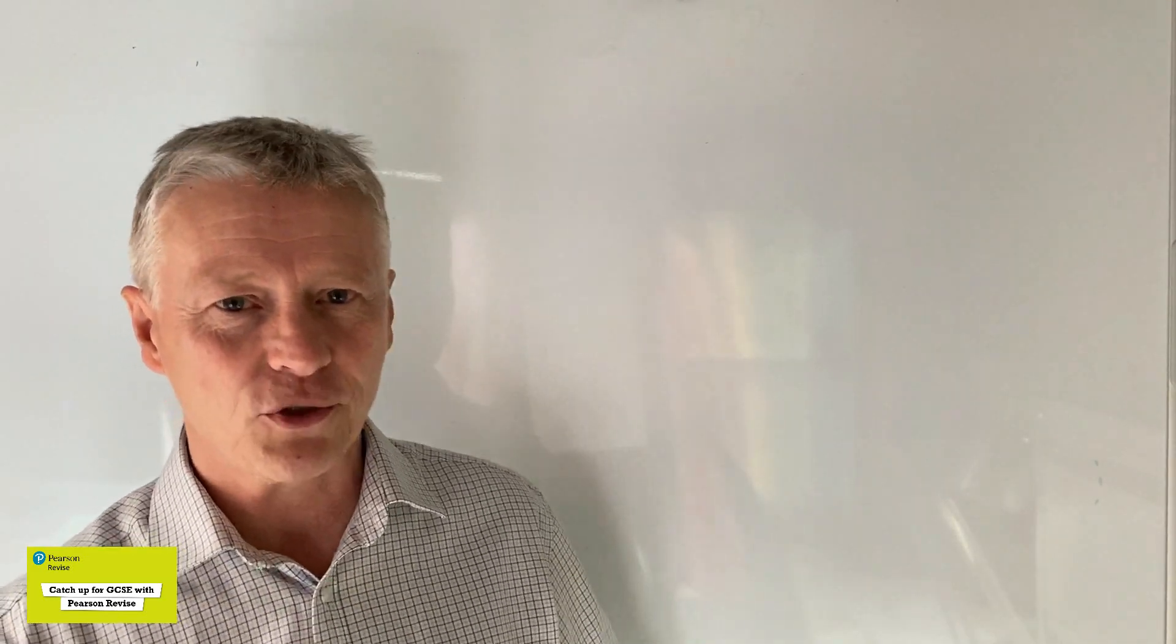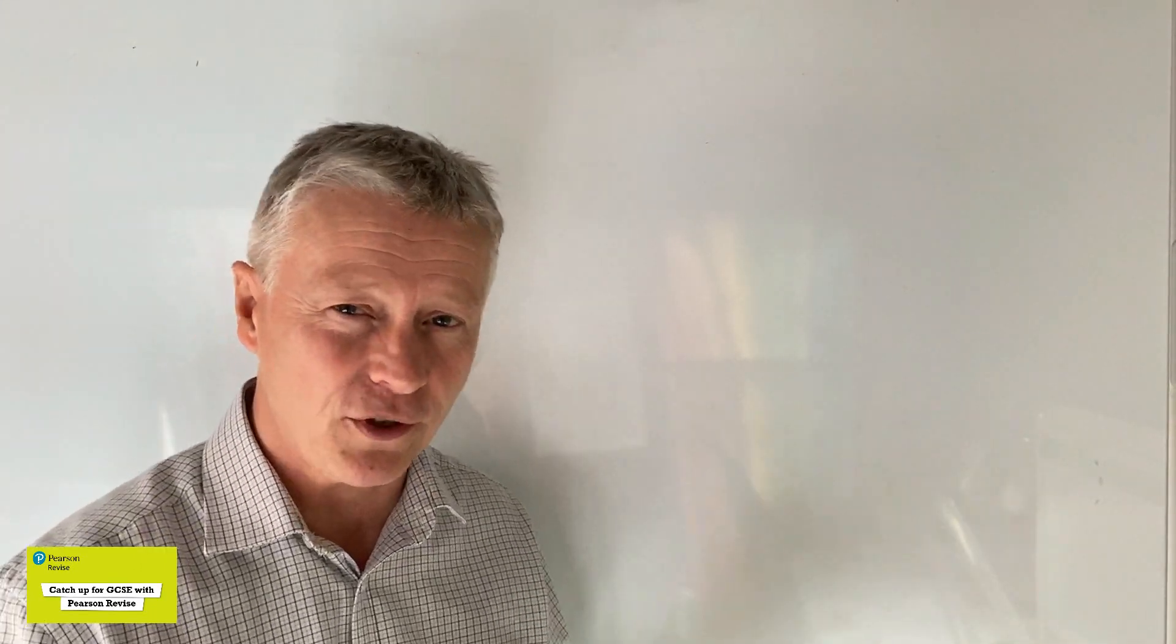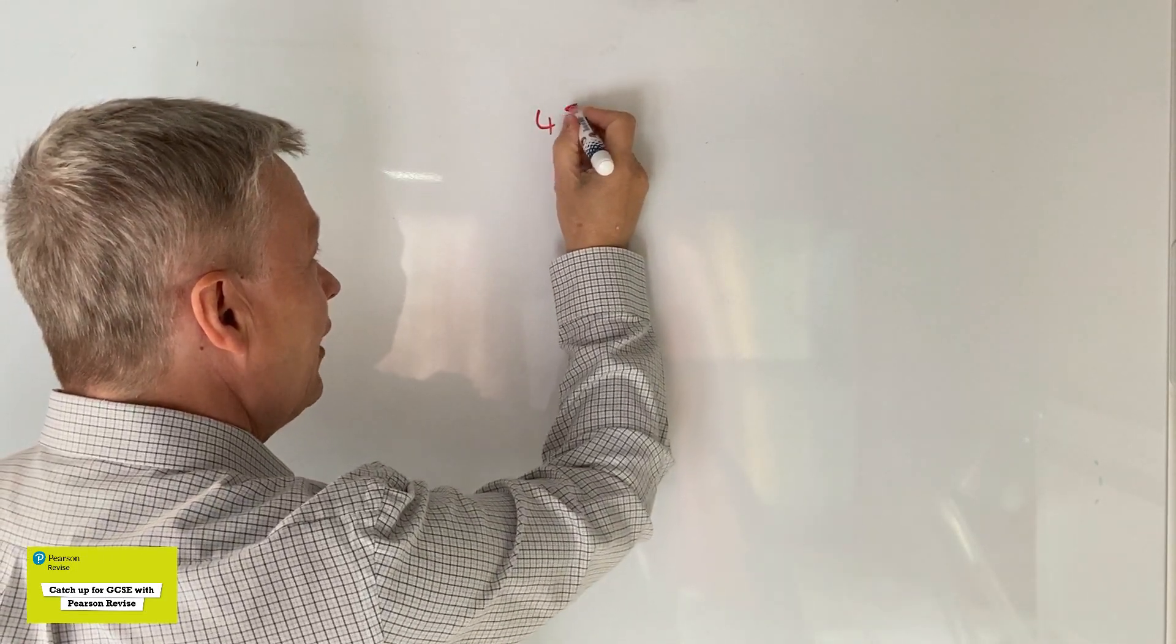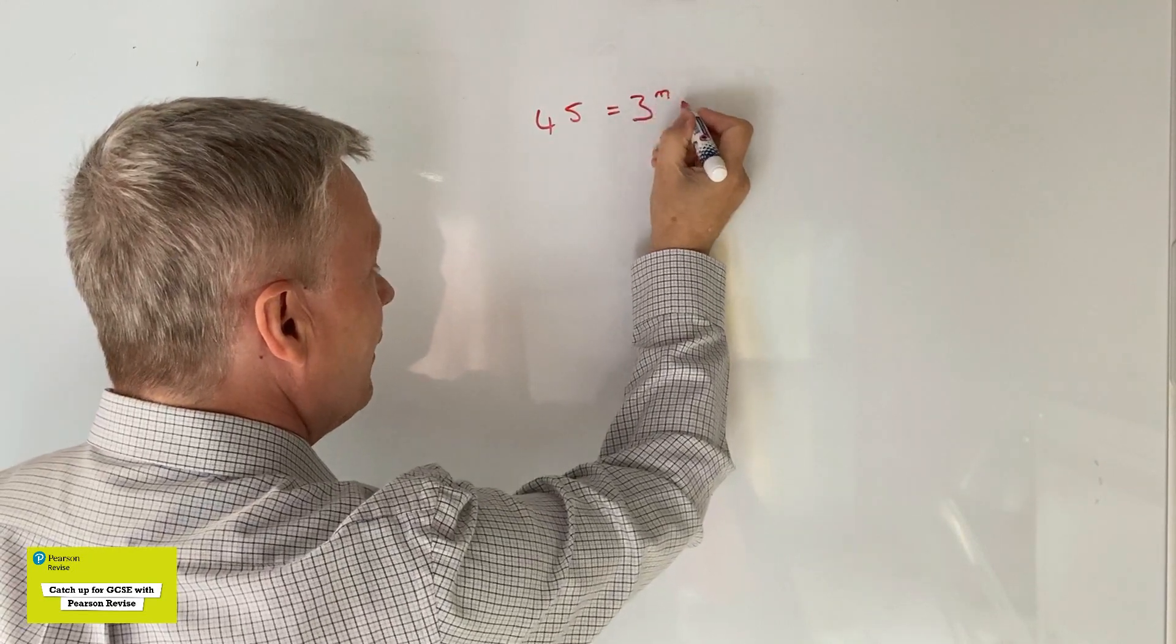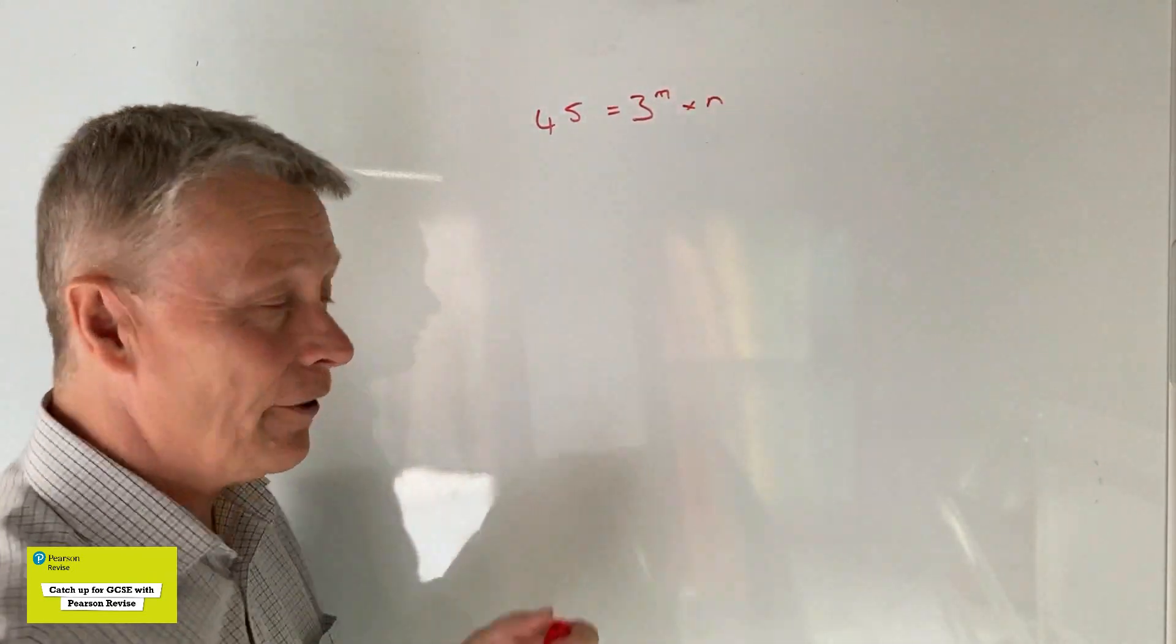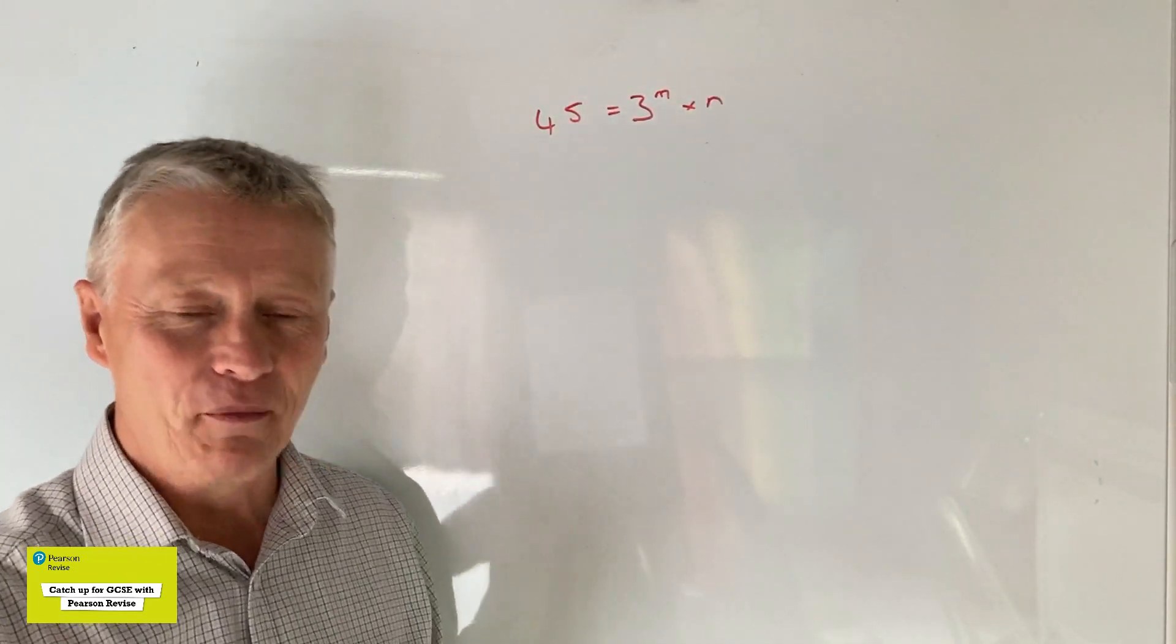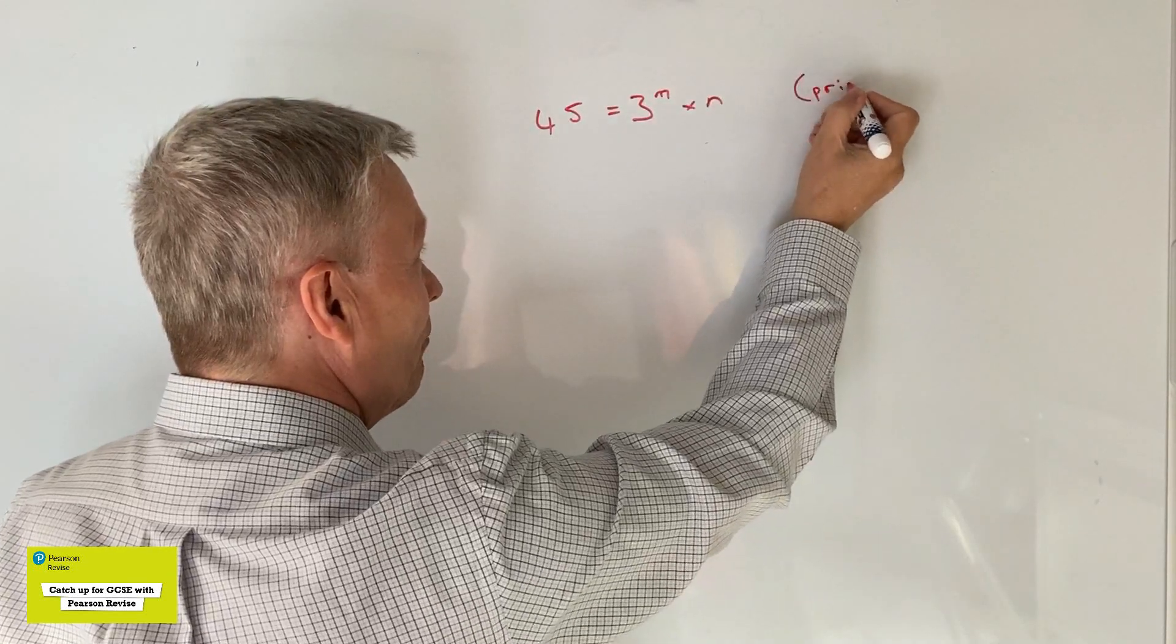It's a little bit tricky to work out, but hopefully this video will help you to have a look at what they're trying to achieve. So what they say is that 45 equals 3^m times n, and our job is to find out the value of m and n when both of them are prime numbers.